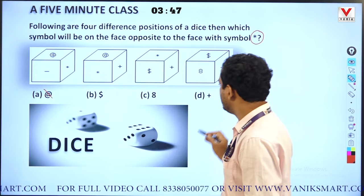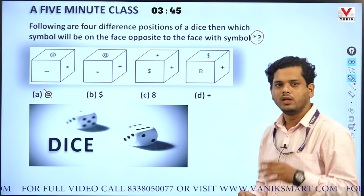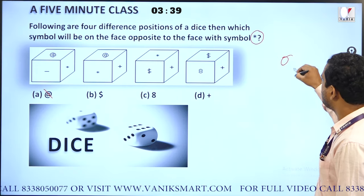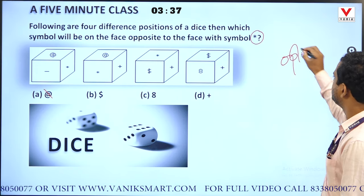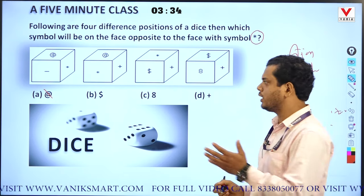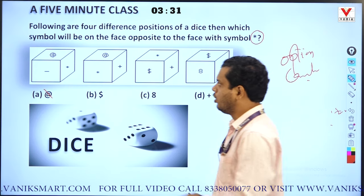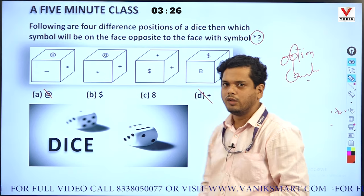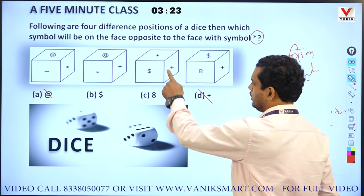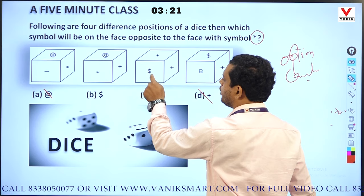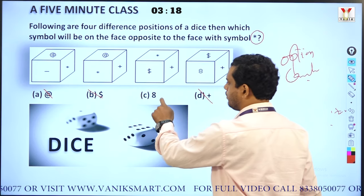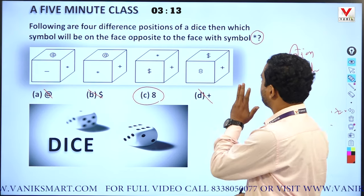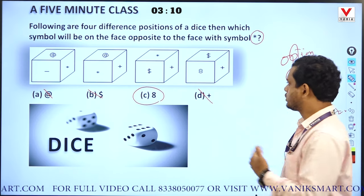So at-the-rate and minus should be disqualified from the answer options because we have to find the opposite one. This is option cancellation method - cancel options to get the answer. Here plus is also adjacent, so plus cannot be opposite. And dollar is also adjacent, so dollar is also cancelled. This means our answer is eight. The opposite of star is eight.